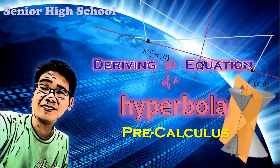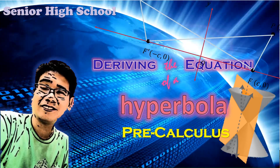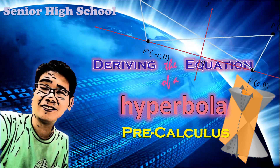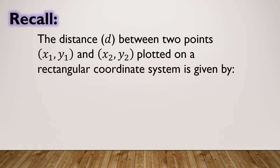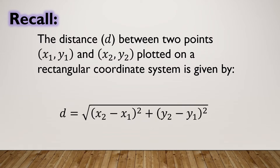Welcome to senior high school mathematics. We will have free calculus, and this time we're going to derive the equation of a hyperbola. Before we continue, let us recall an important concept: the distance between two points on a rectangular coordinate system. The distance d between two points (x₁, y₁) and (x₂, y₂) is given by d = √[(x₂ - x₁)² + (y₂ - y₁)²].